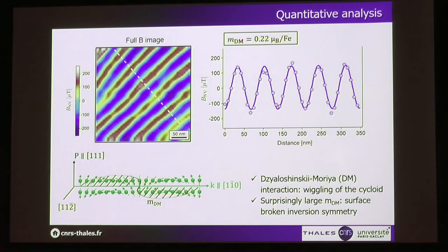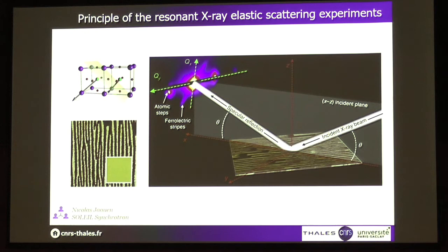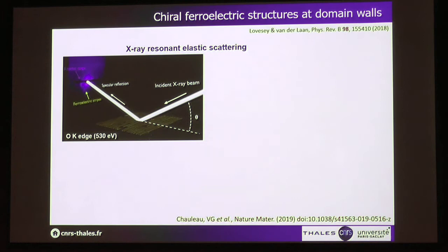Since we have a periodic system, we also looked at these films with X-ray resonant elastic scattering, performed at the Soleil Synchrotron with Nicolas Jaouen and colleagues at CEA. We send an X-ray beam tunable in energy and look at the diffracted pattern. When we tune the energy to the oxygen K-edge, we can see two spots corresponding to the ferroelectric stripes. Notably, we observe circular dichroism from these ferroelectric stripes, which is quite striking and indicates an electric chirality in these films.